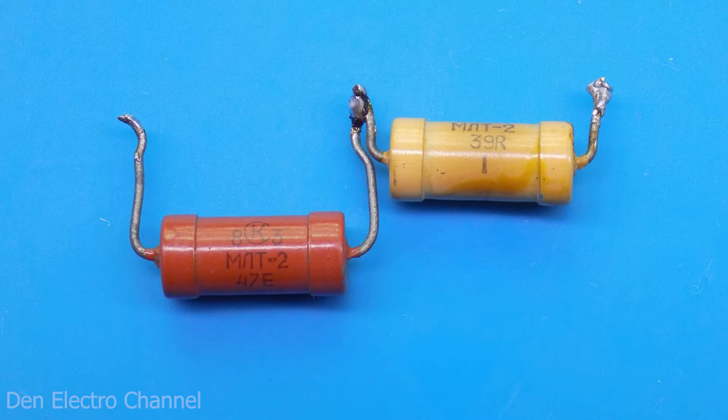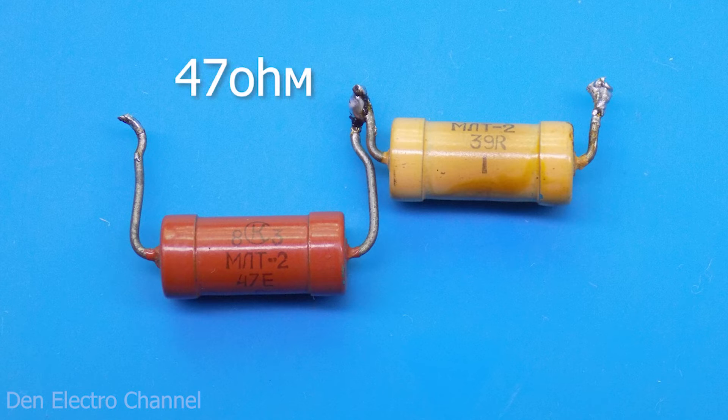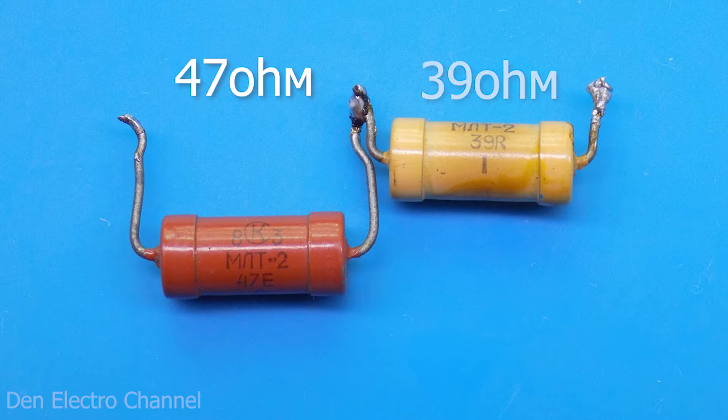86 ohm resistors are not produced. The closest rated resistor is 91 ohm, but I couldn't find one. So I took two other resistors and soldered them in series. The resistance of the first is 47 ohms and the second is 39, the total is 86.